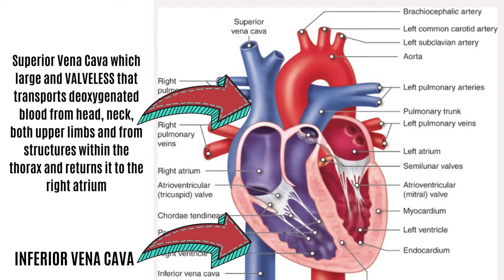Hello. Today's topic is about clinical anatomy of the superior vena cava. The superior vena cava, or the SVC, is a large vein with a diameter of up to 2 cm and a length of approximately 7 cm. It is also a valve-less vein that carries venous blood from the head, neck, both upper limbs, and from structures within the thorax, and returns it to the right atrium.